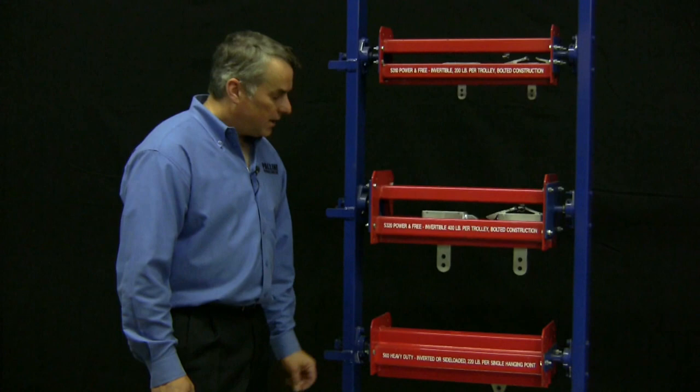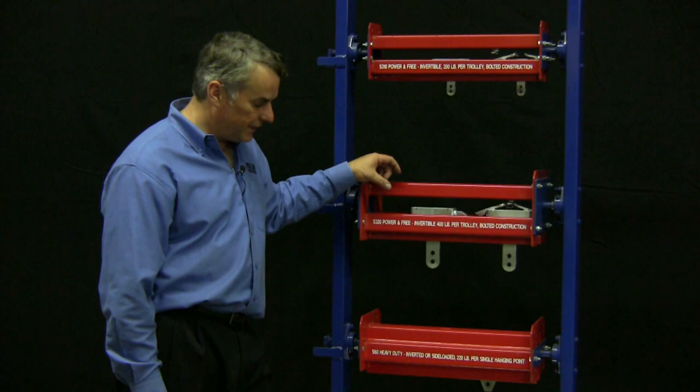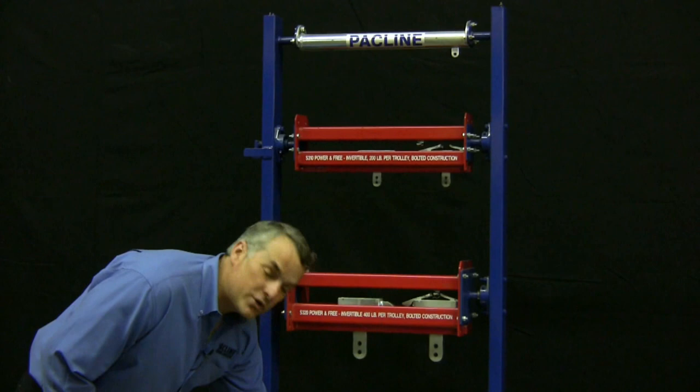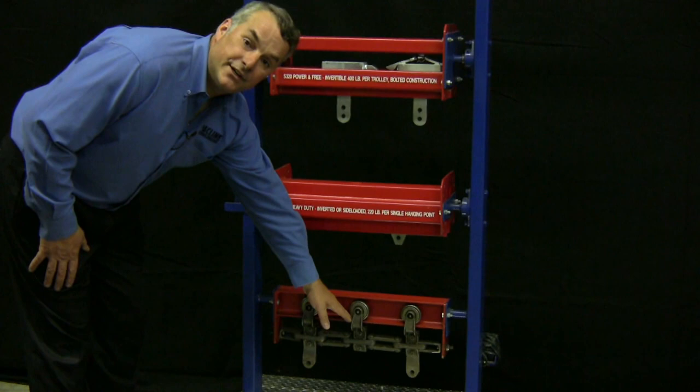Enclosed track conveyors have a bit of an advantage over other conveyors in that they're very safe. So if this conveyor was running, I could actually touch the track without any danger of getting my fingers caught in the mechanisms. On an open track conveyor, you can see that these bearings are all exposed. If I was to put my finger in here, I would probably lose it.